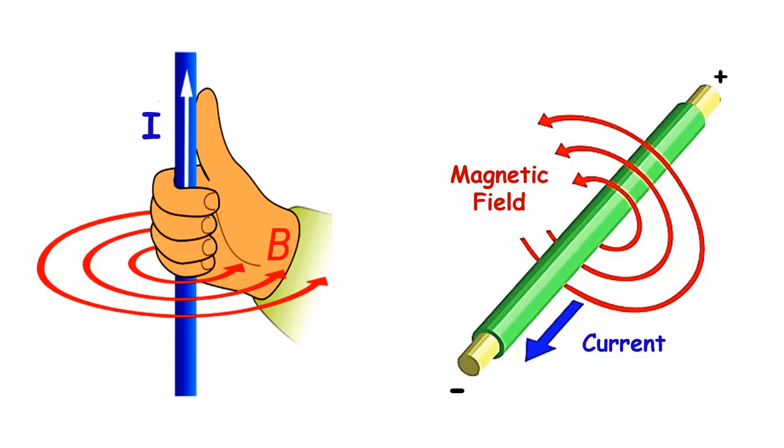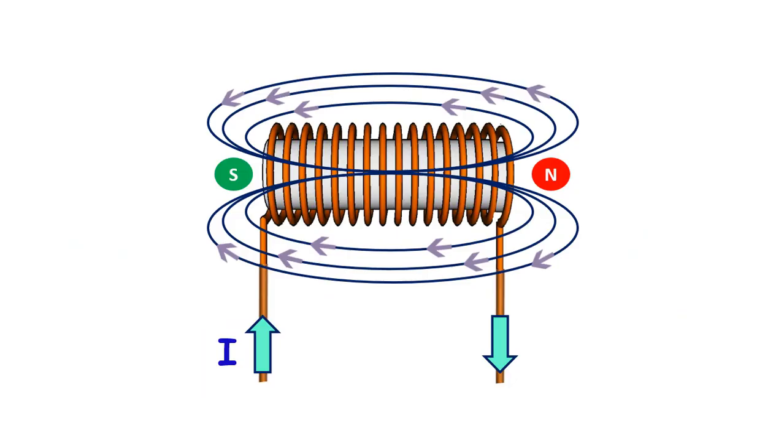In order to better understand the working logic of the transformer, we must first look at Ampere's law. According to this law, a magnetic field is formed around a conductor through which a certain current is flowing. When we wrap this conductor on the core, which is made of a ferromagnetic material such as iron with very good magnetic permeability, we increase the intensity of the magnetic field. In fact, it is an electromagnet in a coil structure.